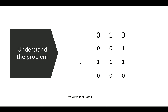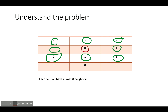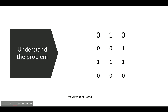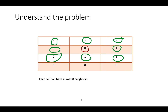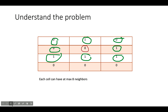Let's understand the problem. We are given a grid that has two states: alive and dead. Here one means alive and zero represents dead. For calculating neighbors, we will consider eight possible positions as represented in green. For the cell represented by red, it has eight possible neighbors. Each cell can have a maximum of eight neighbors, and those at the boundaries will obviously have fewer neighbors.